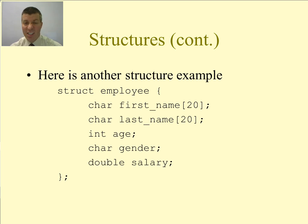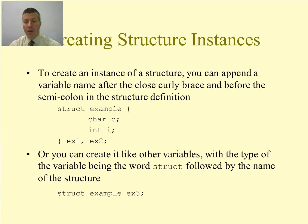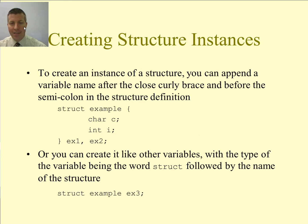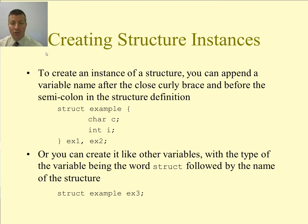It's a good thing if it's a double instead of a float — that's a pretty good salary if you ask me. So how do we now create an instance of a structure? To create an instance of it, we append a variable name after the closed curly brace and before the semicolon in the structure definition.